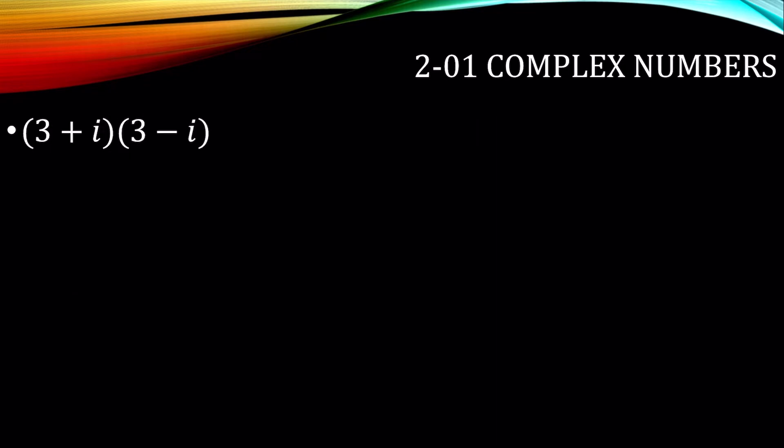Let's try another one. Multiplying again. 3 times 3 is 9, negative 3i, positive 3i, and negative i squared. Combine those to make 0. And i squared is negative 1. So that would become 9 plus 1 is 10.